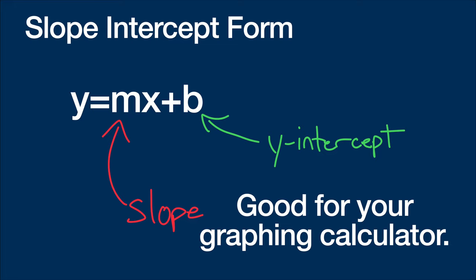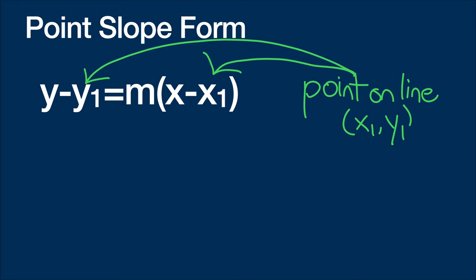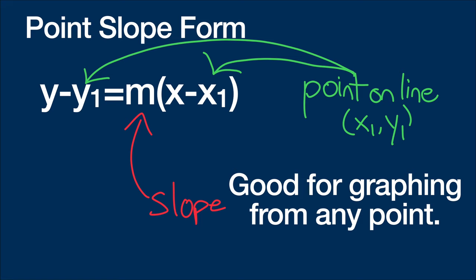Now there is another form that I think is also very good if you're not using a calculator, and that is point-slope form. Point-slope form is y minus y1 equals m times x minus x1. Now let's start with what x1 and y1 are, and those are a point on the line, (x1, y1), and m is still of course the slope. This is good for graphing from any point because you can start wherever you don't have to start at the y-intercept with this. In fact, it's especially good if the y-intercept is some horrible number like 1.42789, it's much better if you can start from like negative 1, 3 or something like that.